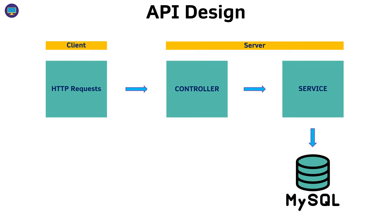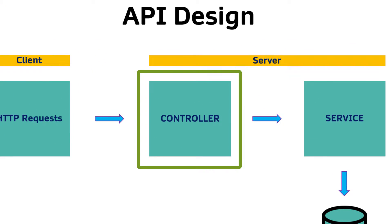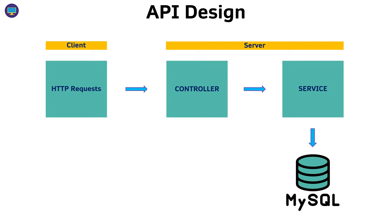And then in the service, along with other utility classes you would have that you can call inside of that service, you would do all of your logic and then access the data from the service as well. At this point we're done with the service, we have our data layer connected, and now we're just going to go ahead and work on the controller. The controller is going to be receiving all of the requests coming in and sending all the responses, and this is the part of the backend or the server that is going to be exposed to the world.